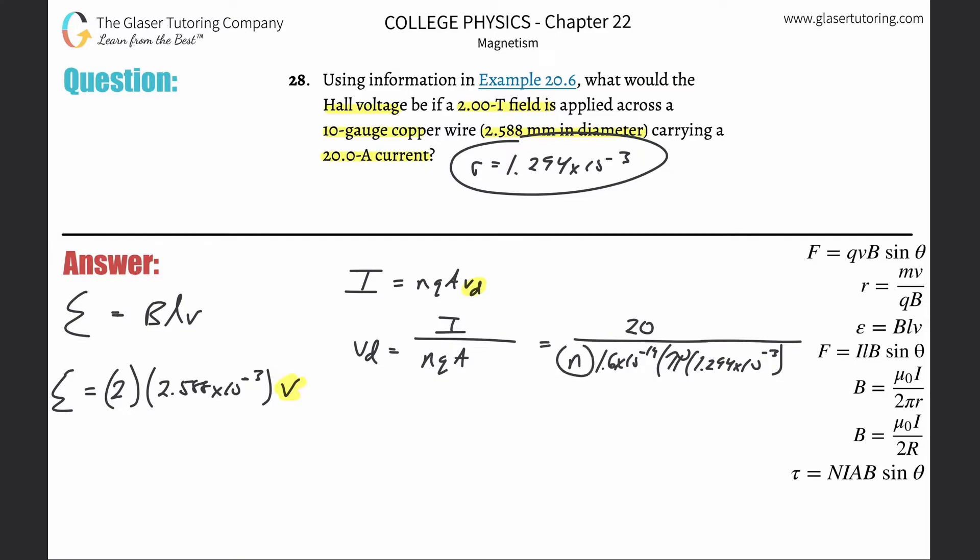Now I need to find this n, that's the hard part. That's basically the charge density. What we're going to need to do is realize that copper is only carrying one electron per atom. That's an assumption we have to make.